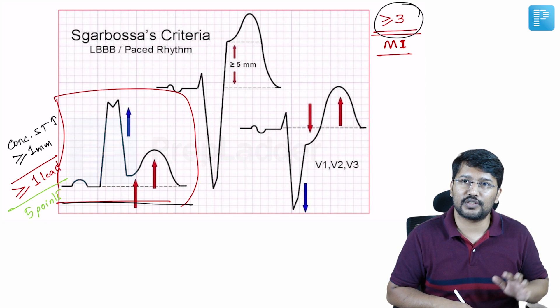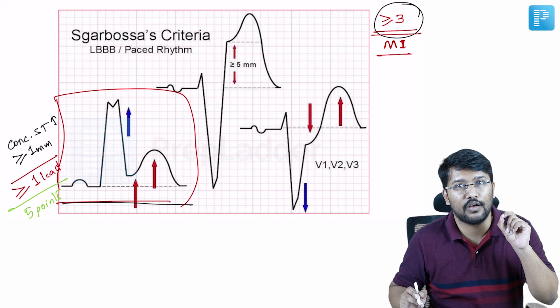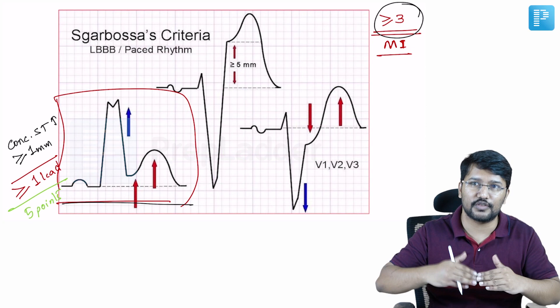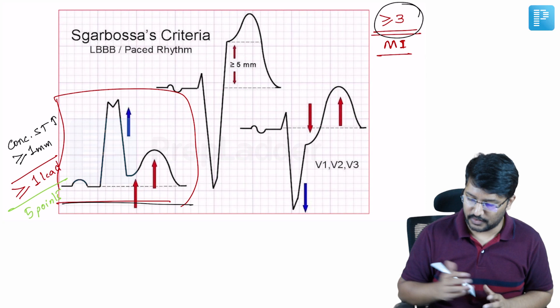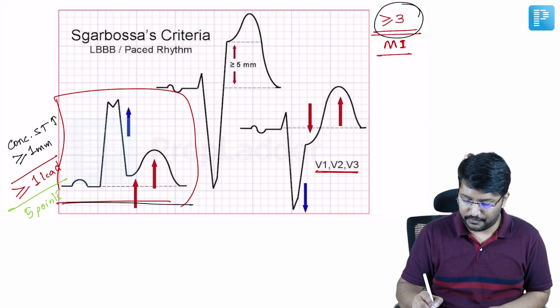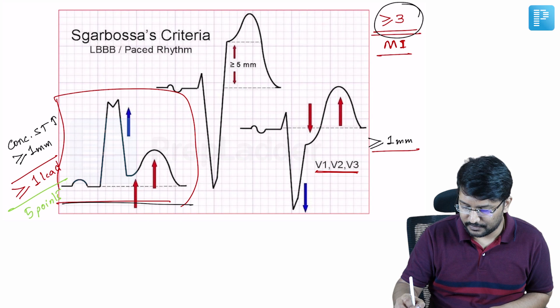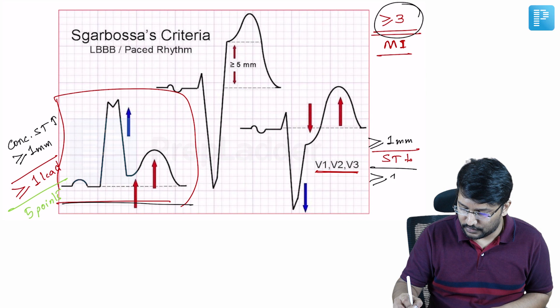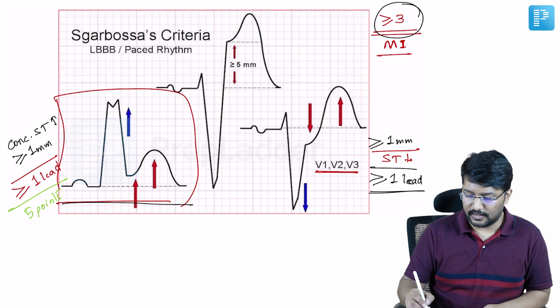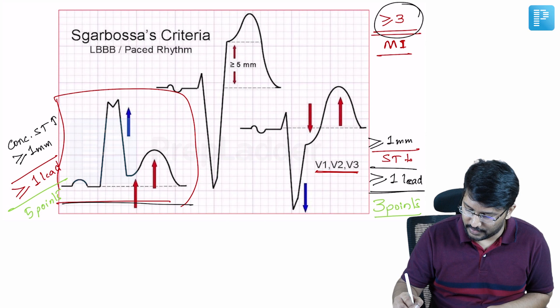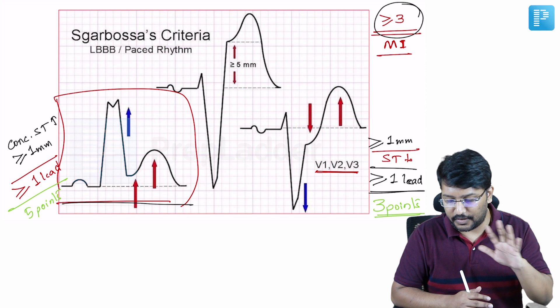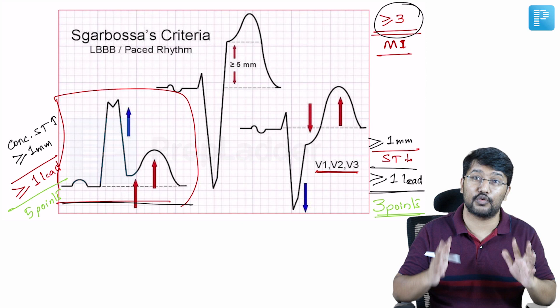The second criterion is about concordant ST depression. ST depression means the ST segment is going down. The leads where it could be concordant are where there is a predominant S wave — so we are talking about leads V1, V2, V3. If there is more than or equal to one millimeter ST depression in more than or equal to one of those leads, the patient gets a score of three points. Even finding this is virtually diagnostic of MI according to Sgarbossa's criteria.